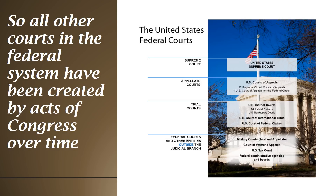All other courts in the federal system have been created by Congress. Looking at a hierarchy diagram, there are very specific routes a case must travel in order for a court to have proper jurisdiction. Generally, most cases start at the trial court level, which has original jurisdiction — the originating point. On the federal side, trial courts are called US district courts.